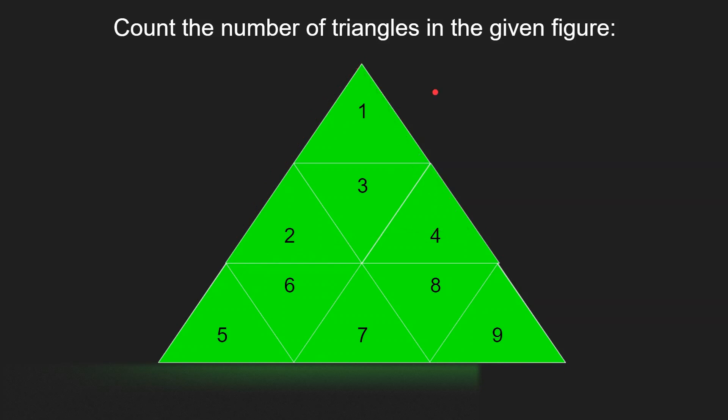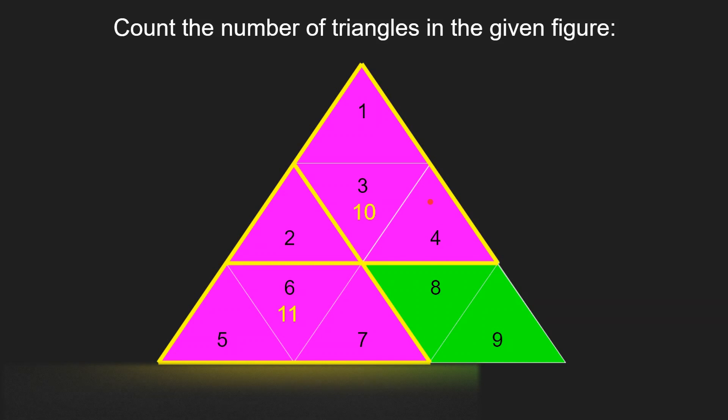This will be our second unit. The triangles formed by 1, 2, 3, 4, then 2, 5, 6, 7, and 4, 7, 8, 9 form three larger triangles. Let's name them 10, 11 and 12.